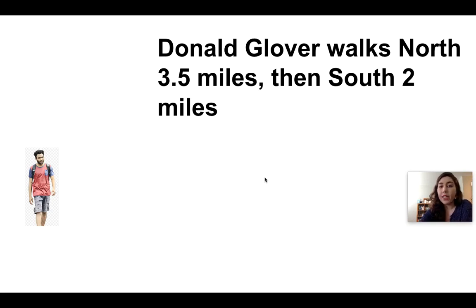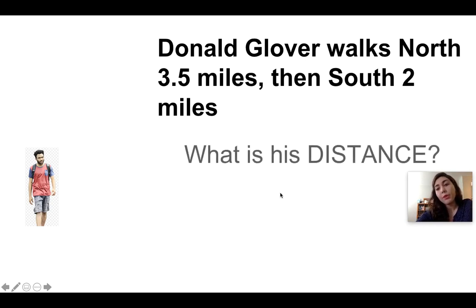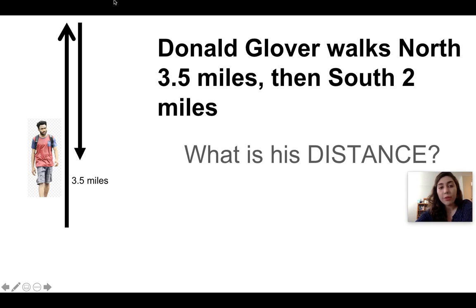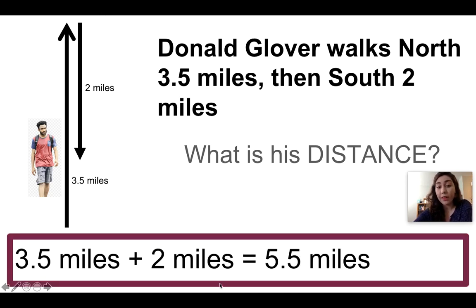Donald Glover walks north 3.5 miles, then he walks south two miles. What's his distance? If he goes north 3.5 miles then south two miles, you add all the paths he traveled — 3.5 plus 2 — and you get 5.5 miles. That's his distance, and remember distance is a scalar, which means it does not include direction.